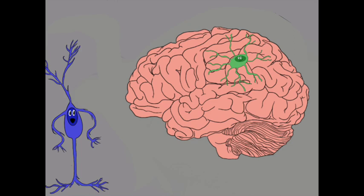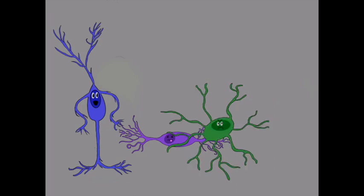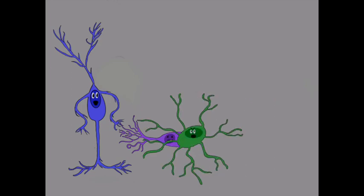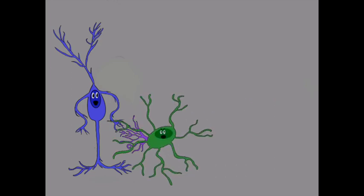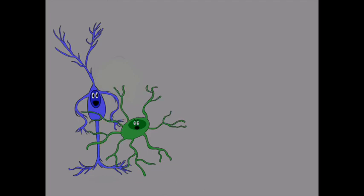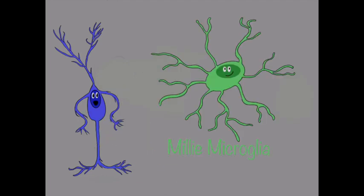When she comes across something that shouldn't be there, she becomes activated. Take for example, if Ingrid was injured and subsequently died. Millie would come and eat up any of the cell debris to clean up the area. She's also responsible for the immune response, which can include rallying other immune cells to come to the brain. She keeps us protected from injury and invasion.